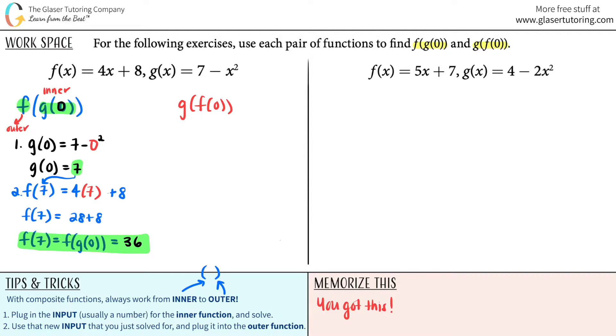Follow the same rules. The inner function now is the f function. The outer function is the g function. So for number 1, we're going to be doing the f function first, f of 0. Which means that any time that I see an x value, right here, I'm going to plug in a 0. So 4 times 0 plus 8. Finish it out. f of 0 would be equal to 4 times 0 is 0 plus 8, which is just an 8.